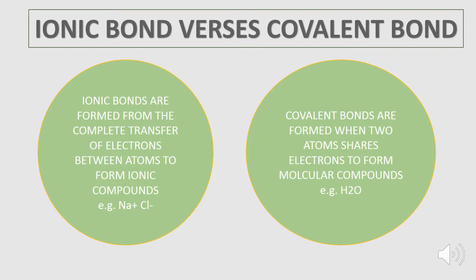Ionic bonds are formed from the complete transfer of electrons between atoms to form ionic compounds. For example, sodium chloride. Covalent bonds are formed when two atoms share electrons to form molecular compounds. For example, water.